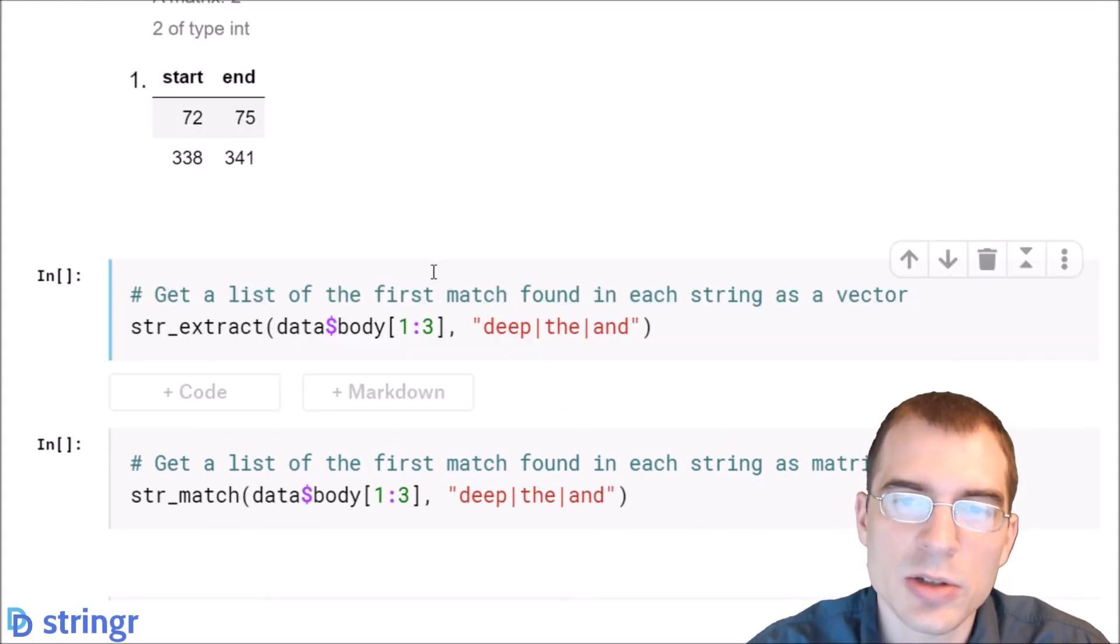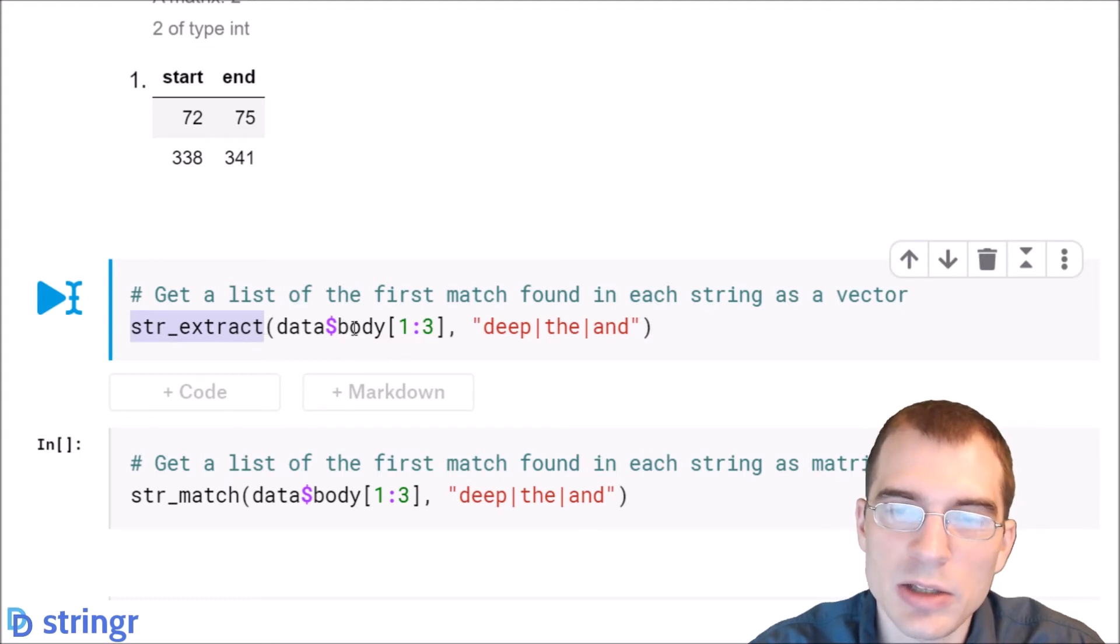Now if you actually want to extract the matching value, you can do that with the str_extract function. That will get you the first match found and return it as a vector. So we're going to look at the first three posts. This time we're actually going to pass in a different pattern. Instead of only looking for the word deep, we're going to look for deep or the or and. That's what these bars do.